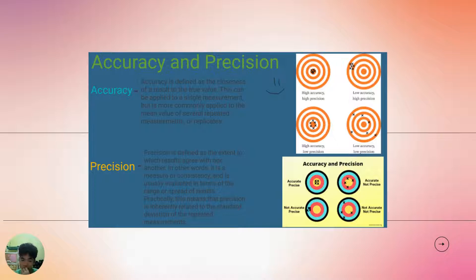Precision is defined as the extent to which results agree with one another. In other words, it is a measure of consistency and is usually evaluated in terms of the range or spread of the results. Practically, this means that precision is inherently related to the standard deviation of repeated measurements.